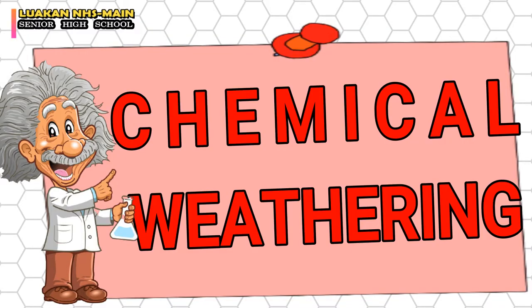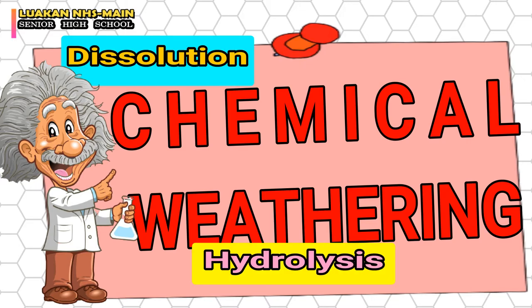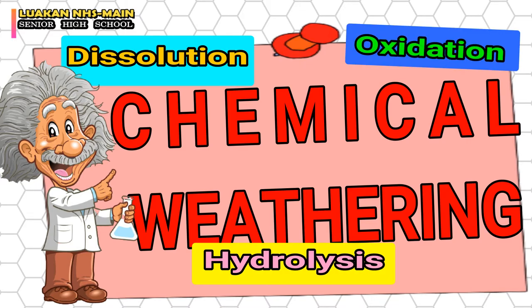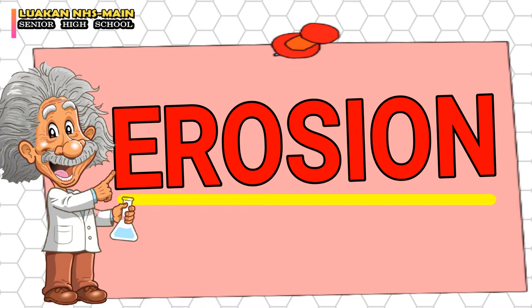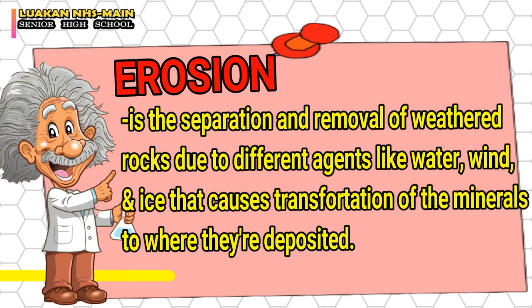Those are the three processes under chemical weathering: dissolution, hydrolysis, and oxidation. Now that we're done with weathering, let's move on to erosion. By definition, erosion is the separation and removal of weathered rocks due to different agents — like water, wind, and ice — that cause transportation of minerals to where they are deposited.